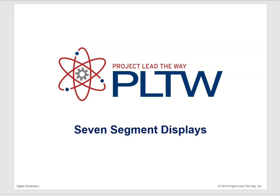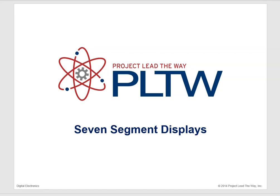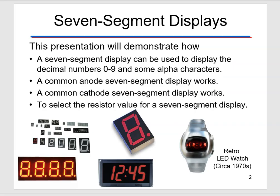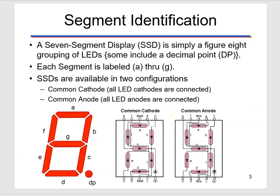So a seven-segment display is simply a figure eight grouping of LEDs together, and those LEDs are labeled.